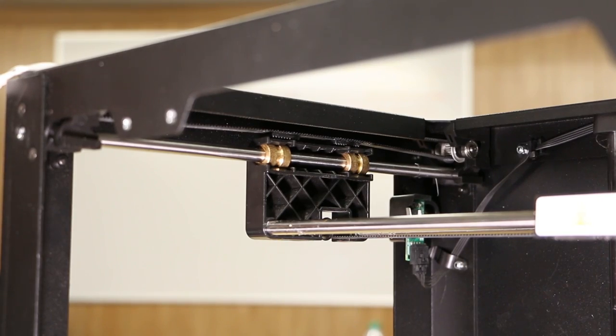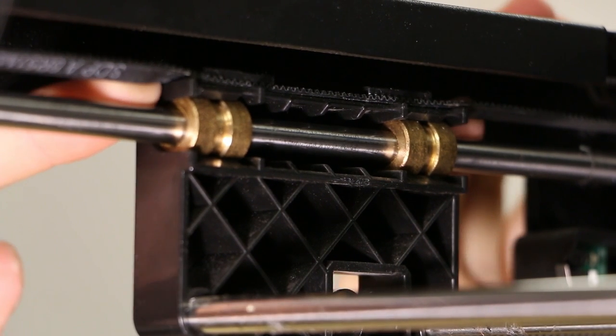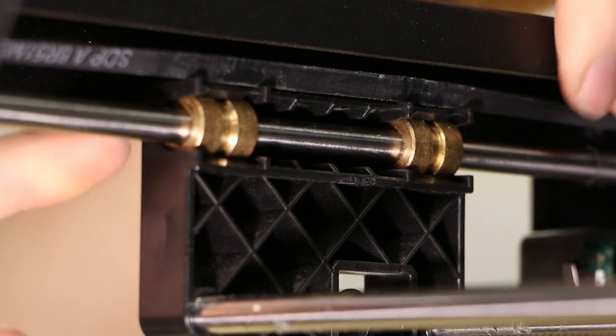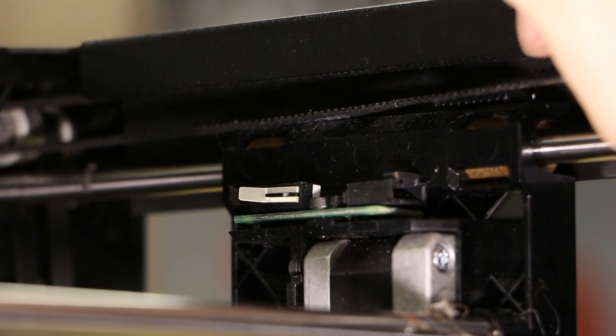Move to the left side of the machine. We will be removing the belt from the Y-axis secondary. To do this, simply push the belt out from the outside of the machine inwards. Back on the right side of the machine, remove the belt.